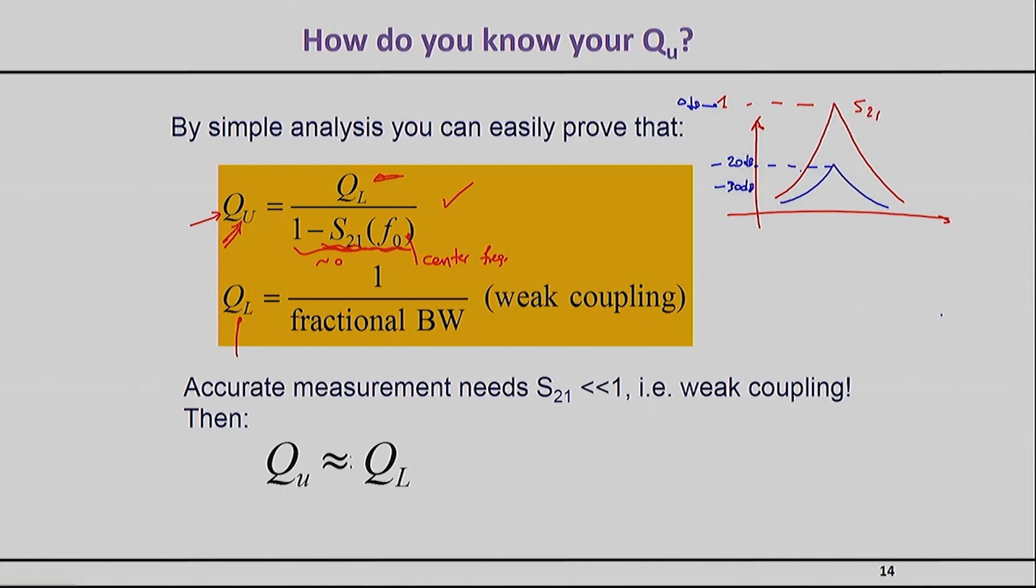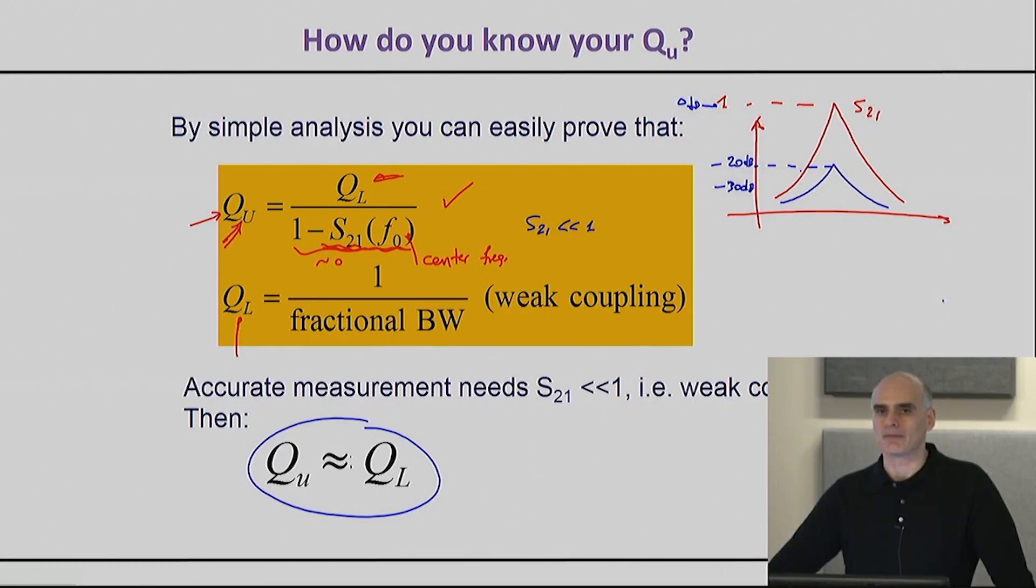So if that's the case—if this S21 number is much much less than one—then this equation actually holds here. In fact, this is what we normally do in real life: we normally will design our circuitry such that the S21 is much less than one. Once we achieve that, then we will simply directly measure the loaded quality factor—that means take this bandwidth here, take the center frequency here, and that measurement yields immediately the unloaded quality factor that you want.